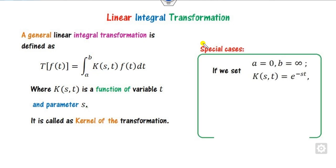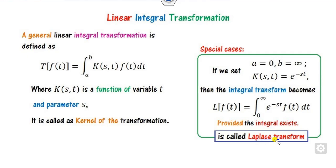If you set K as a particular exponential function, A as 0, and B as infinity, then whatever you substitute here, this transform will be called the Laplace transform, denoted as L. Since this is an integration from 0 to infinity, due to this infinity, it may be that this integration does not exist. So when you say this integral exists, only then can you find the Laplace transform. This is the major question of the existence of the Laplace transform.